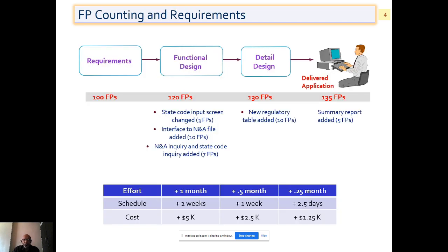Going next, how do we do this? In requirements, there are 100 FPs. In functional design, 20 FPs have been added. In detailed design, 10 more are added. And in application delivery, more files are added. So the total comes out from 100 to 135. This is a migration. If we are covering the phases like this, the number of FPs are going to increase because the number of tasks and activities will be increasing. So schedules and costs also depend on that.